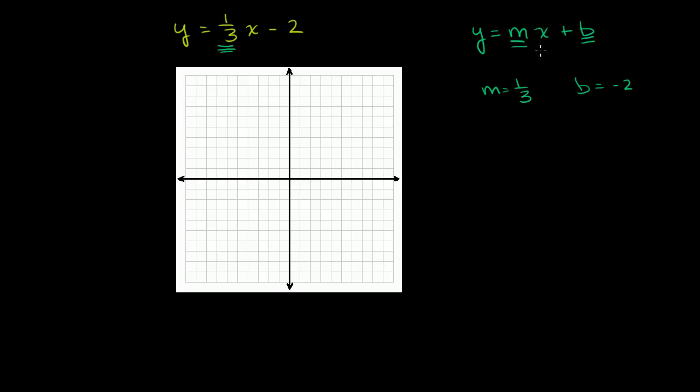Whenever you look at an equation in this form, it's fairly straightforward to graph this line. b is the y-intercept; in this case, it is -2. So this line must intersect the y-axis at y = -2. This is the point (0, -2).